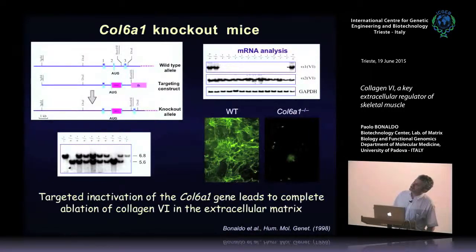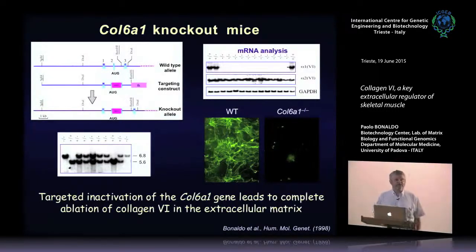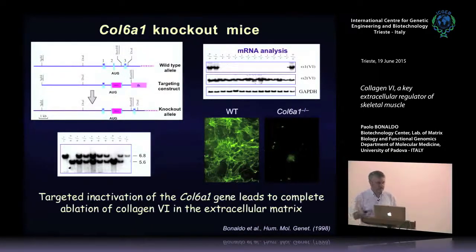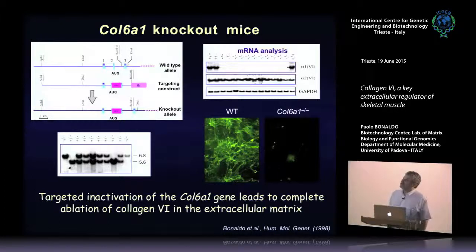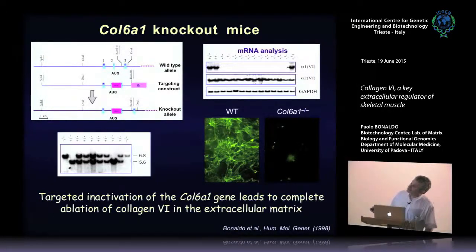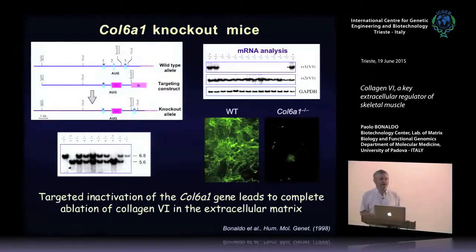When we got the mice we were very surprised — collagen 6 has widespread distribution and is expressed during development, so we expected the ablation might be lethal, or if mice were born, they should have shown severe defects. But these mice looked normal. In genotyping hundreds of litters they were present in Mendelian ratios, apparently normal, fertile, with apparently normal lifespan. We were very upset and depressed at that time.